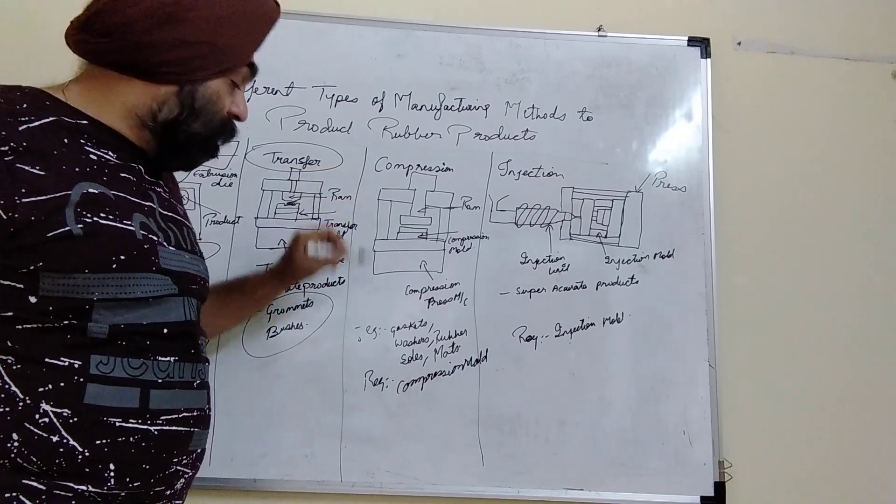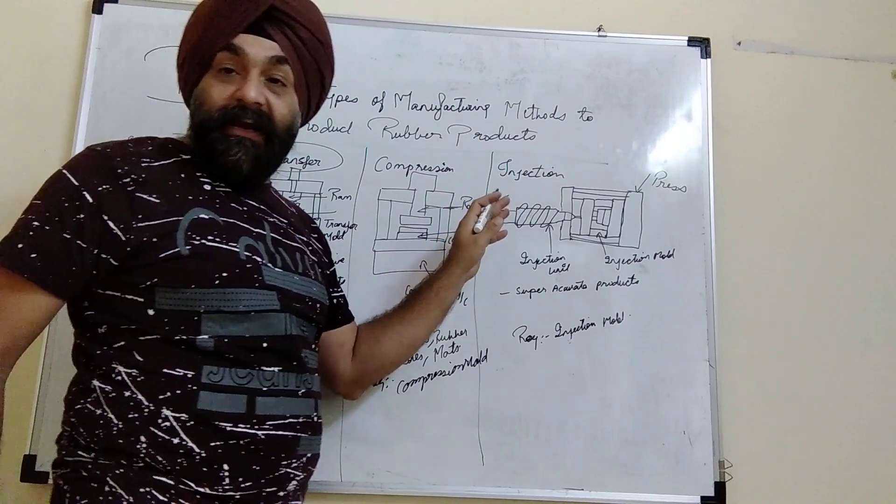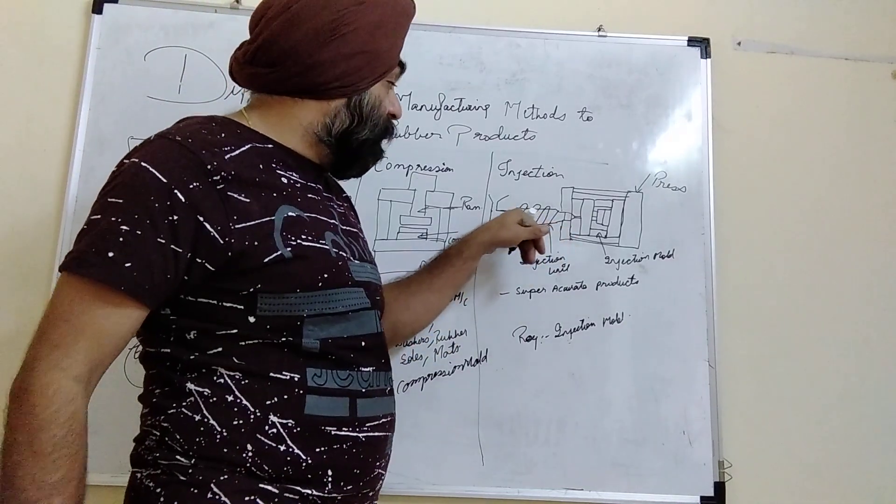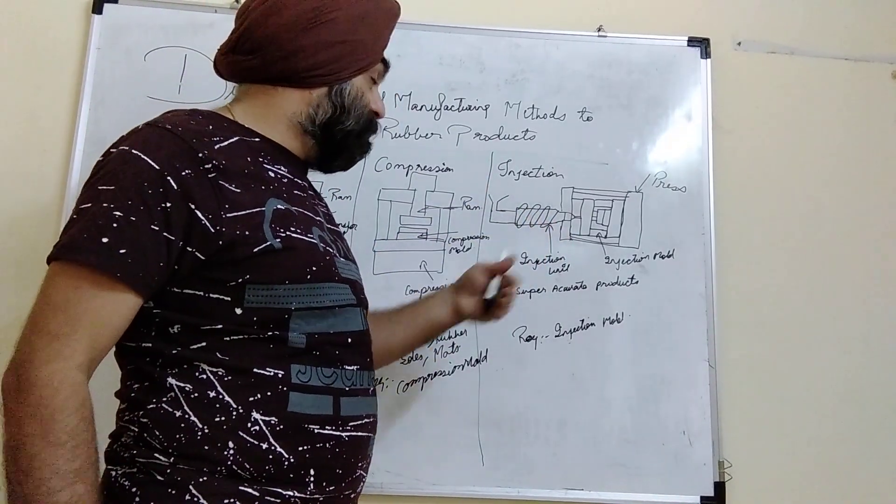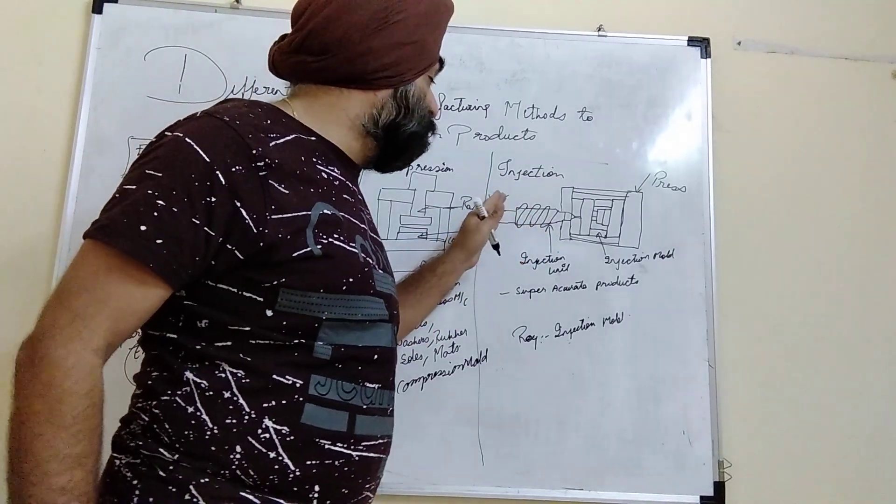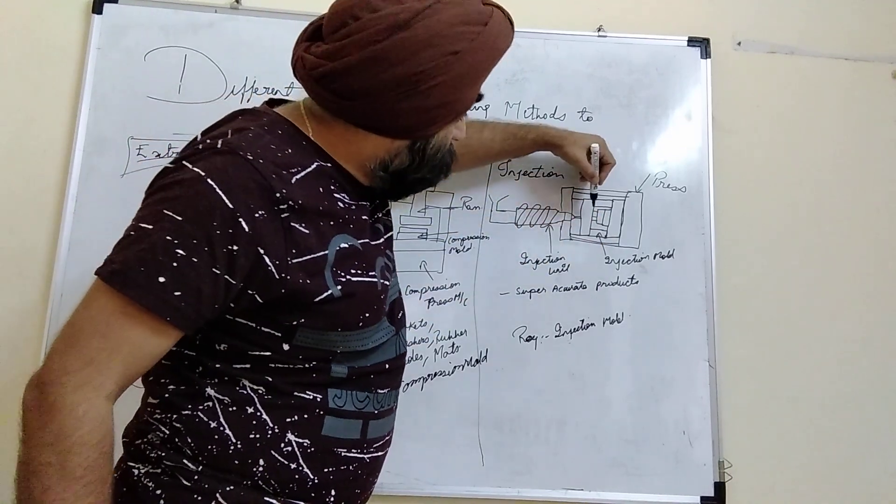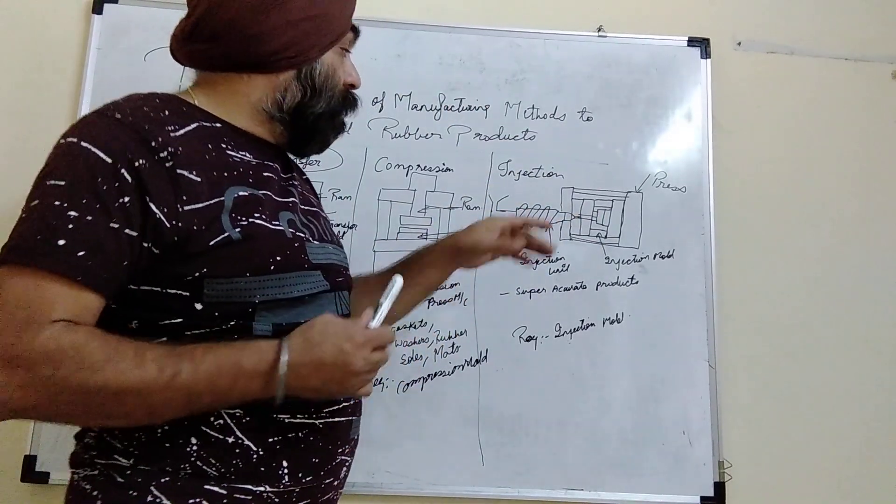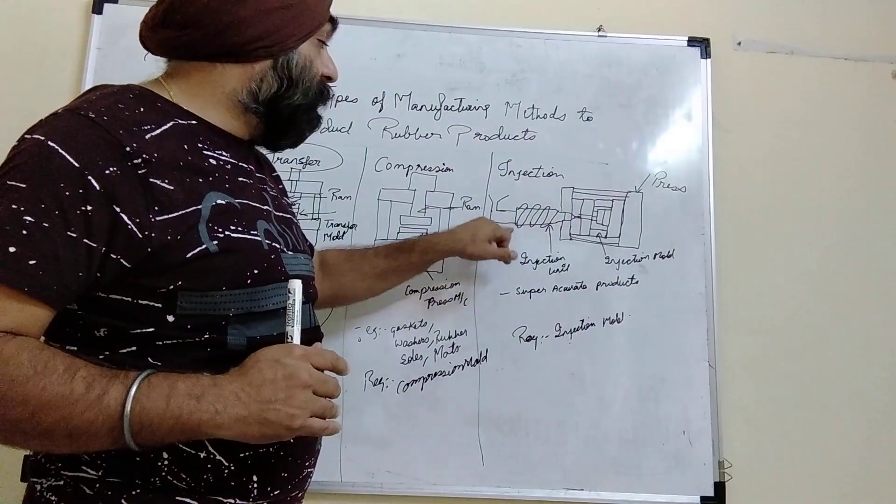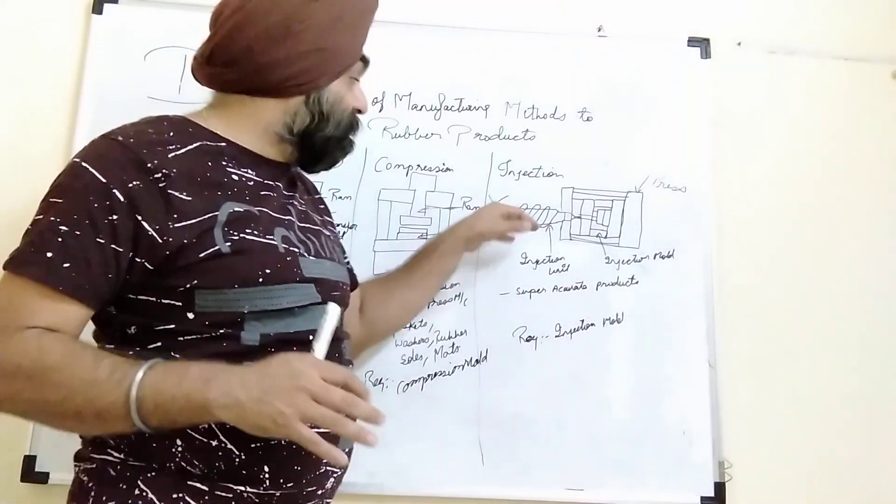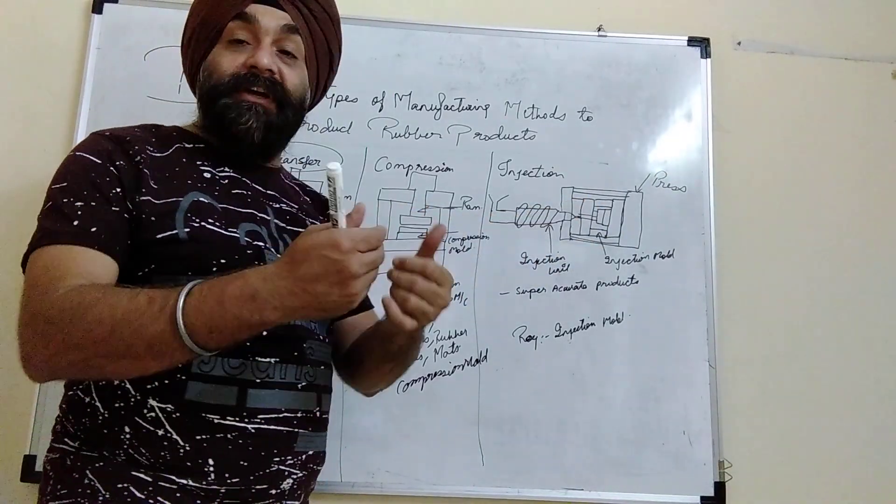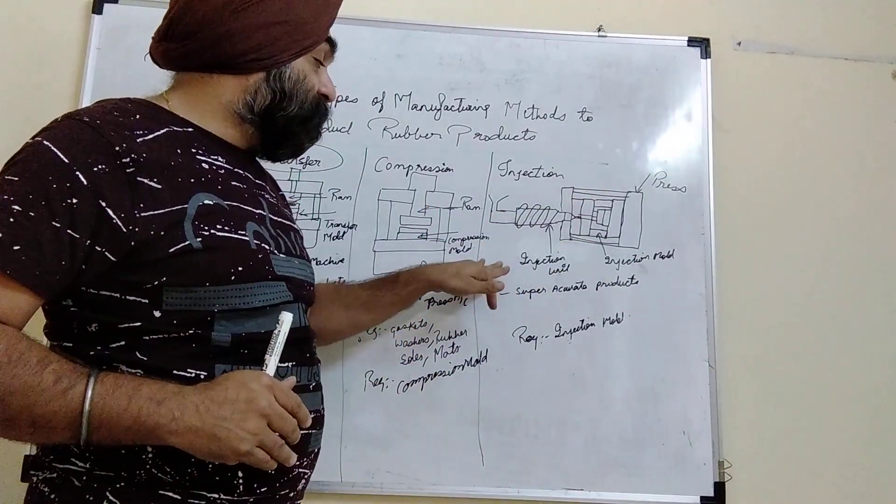Finally, we have injection mold. This is a process where the rubber is preheated with the help of an injection screw, and the rubber is pressurized and inserted into the rubber mold. This is used where you need the highest accuracy, and this is a fast process. Injection molding has the capability of ejecting the product quickly, so it's ideal for super accurate products.